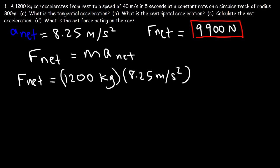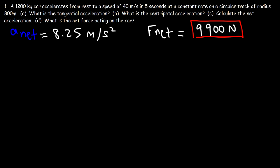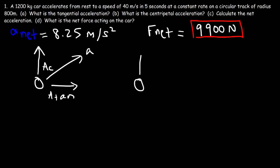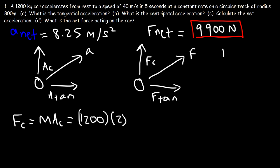For practice, let's also calculate the centripetal force and tangential force. According to Newton's second law, force and acceleration are in the same direction. So we have a centripetal force in the same direction as the centripetal acceleration and a tangential force in the tangential direction. The centripetal force is mass times centripetal acceleration: 1200 times 2 equals 2400 newtons.